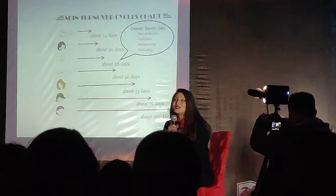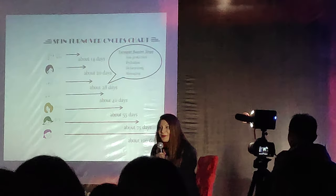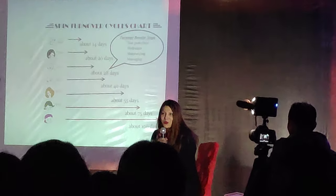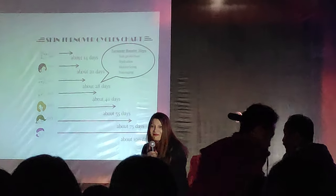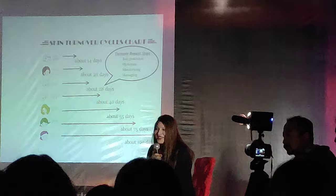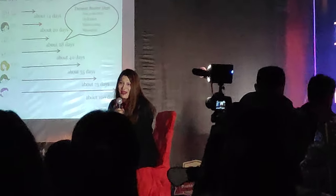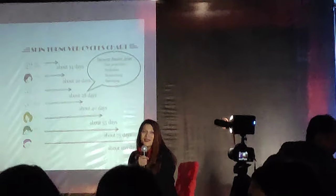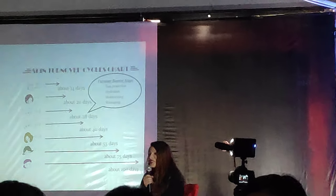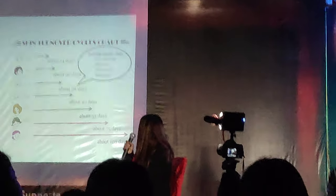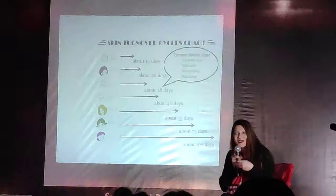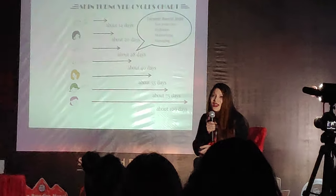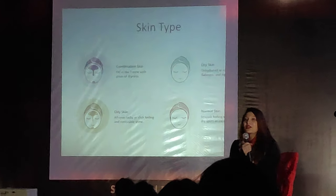How old are you guys? 20s, 30s. Who's the youngest here? 16? I'm 14. And who's the oldest? 30. So you can see the difference — the person who's 16 has a 20-day turnover cycle, so they'll have better skin. The person who's 30 has a slower cycle, so they'll have a little bit of dull skin.